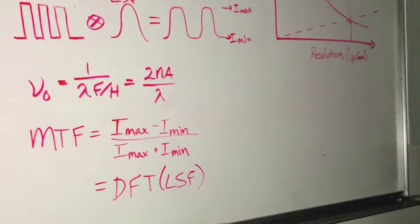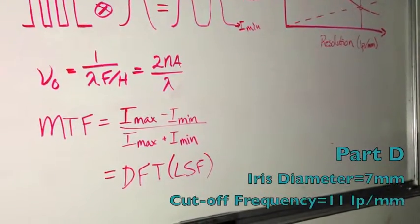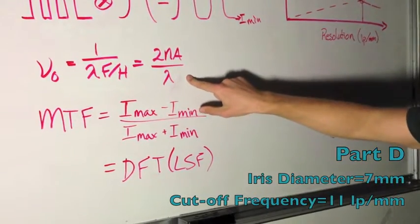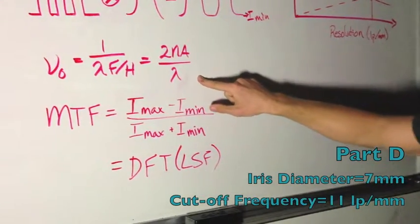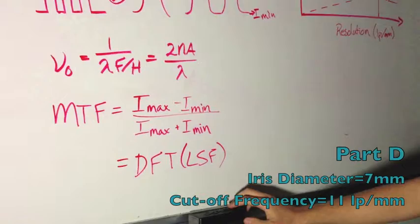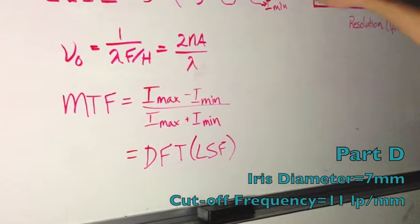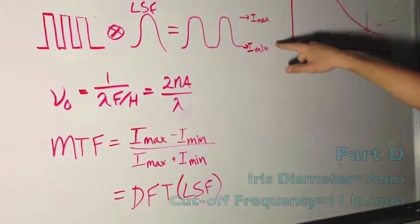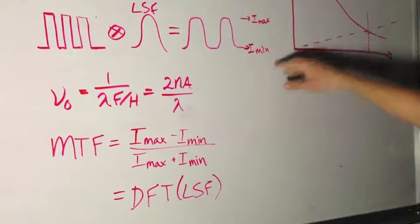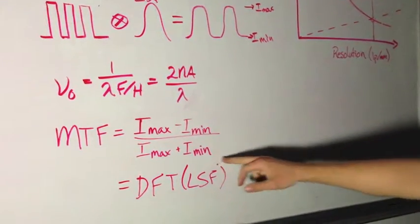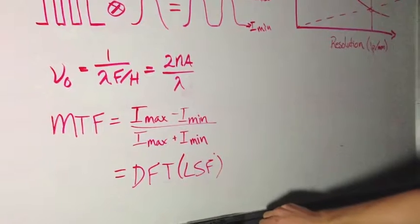We calculate the cutoff frequency to determine how many line pairs per millimeter we can image. MTF is calculated using I-max and I-min, specifically I-max minus I-min over I-max plus I-min. MTF can also be calculated by taking the Fourier transform of the line spread function.